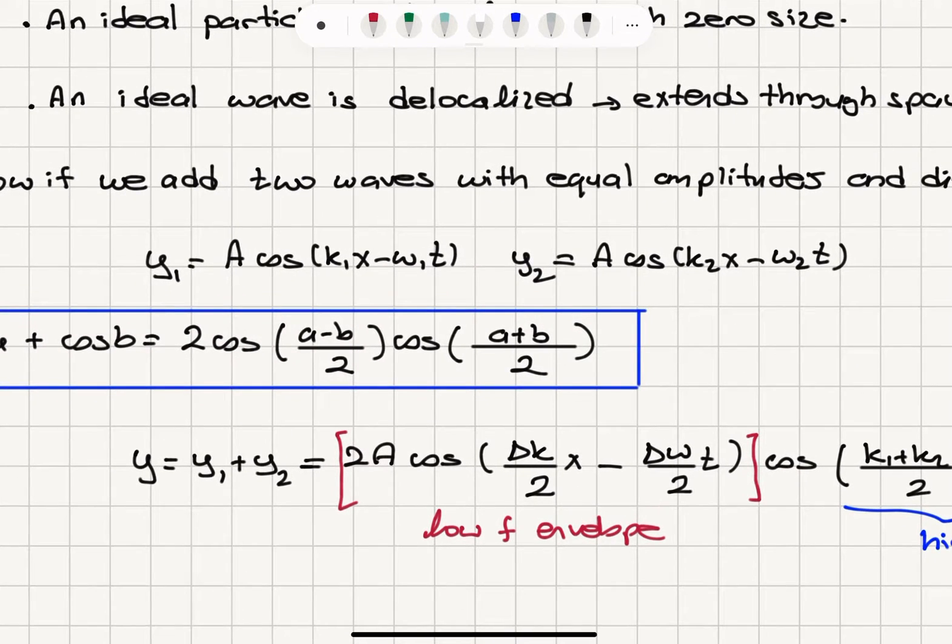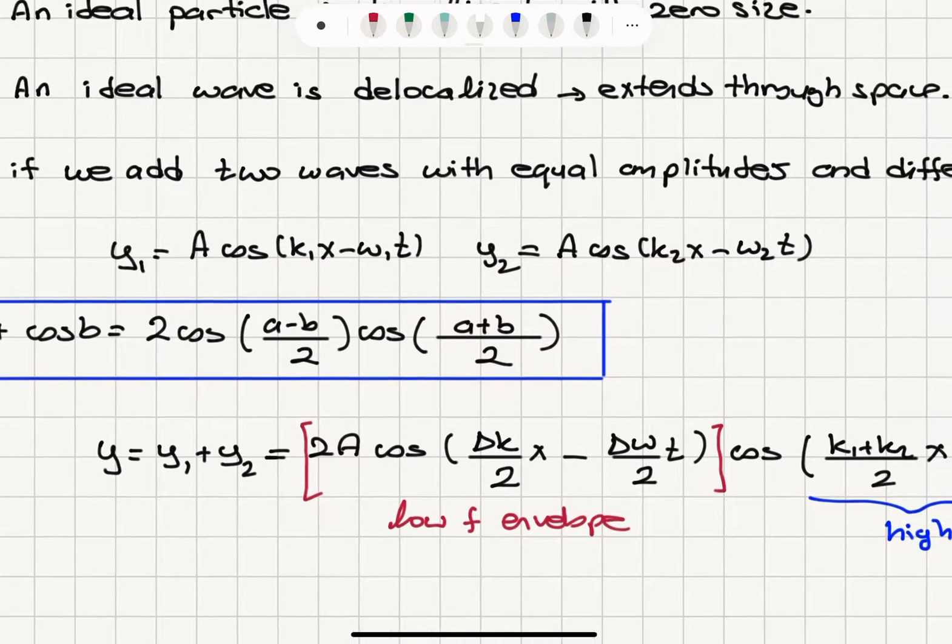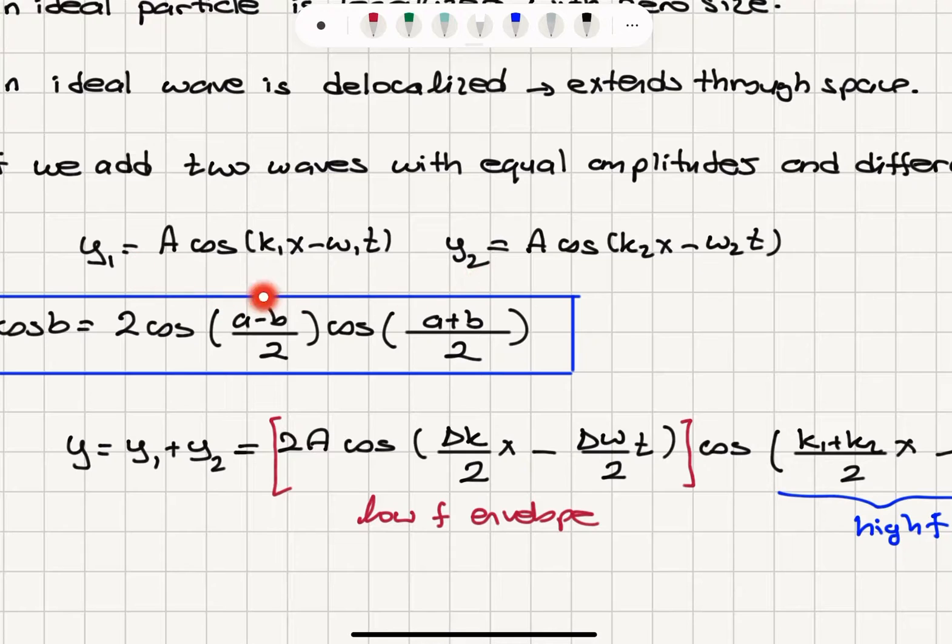So when we apply this trigonometric identity to these two waves, y1 plus y2, the addition of these two wave functions, will give us 2A cosine k1 minus k2 over 2 x minus omega 1 minus omega 2 over 2 t.